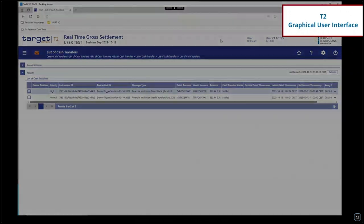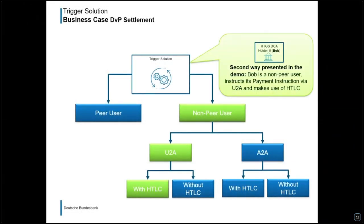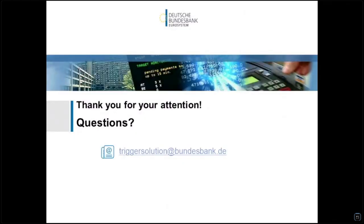Compared to the first use case, the whole process in this second use case takes slightly longer. This is due to the automatic process being temporarily paused and only resumed after the pre-image of the hash is successfully entered. When using the HTLC functionality, it is up to the participants how fast the payment instruction is finally booked on the RTGS DCAs. With this, we have reached the end of the demonstration of the trigger solution. Thank you very much for your attention.